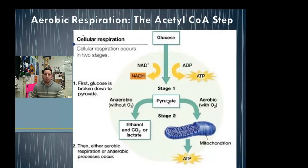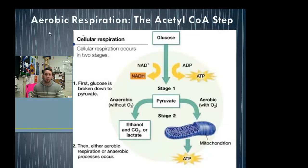Now, what do we do if there isn't oxygen? If we're in oxygen debt as eukaryotes, or if we're prokaryotic and we don't have a mitochondrion, we're going to go through anaerobic respiration or fermentation and create ethanol and carbon dioxide, or we're going to create lactic acid in our muscle cells under oxygen debt. If we are under aerobic conditions — in other words, if there's oxygen present — we're going to continue with aerobic respiration.